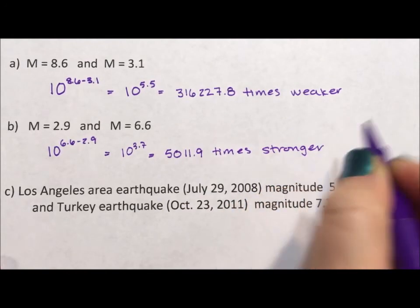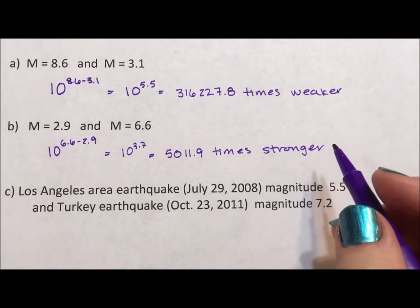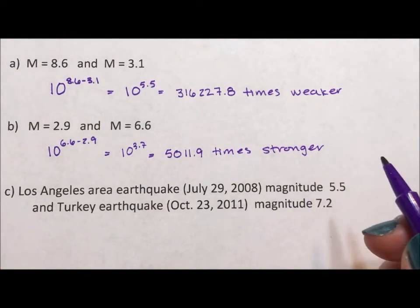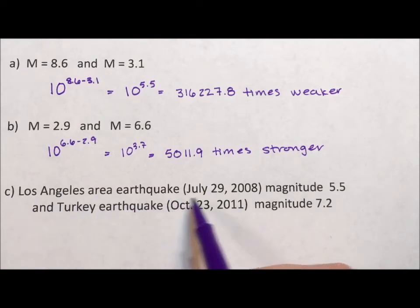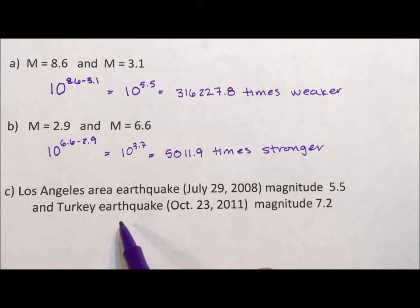All right. So that's enough of the theoretical earthquakes. There are earthquakes happening all the time. If you Google earthquakes, you will find there are tons of them out there. So Los Angeles had an earthquake of a magnitude of 5.5 and Turkey had an earthquake of 7.2.